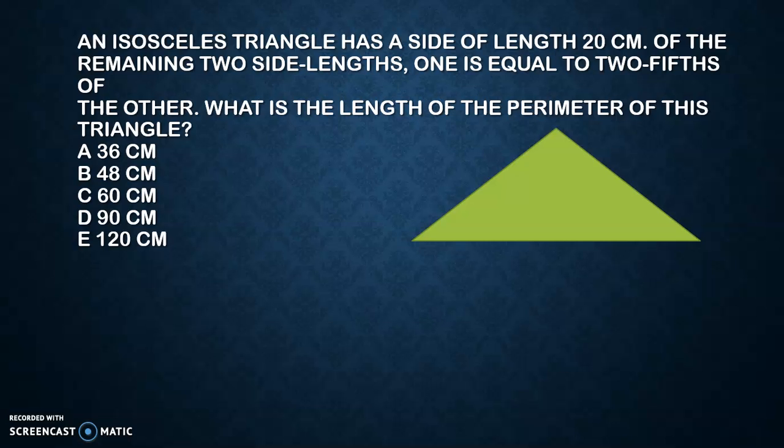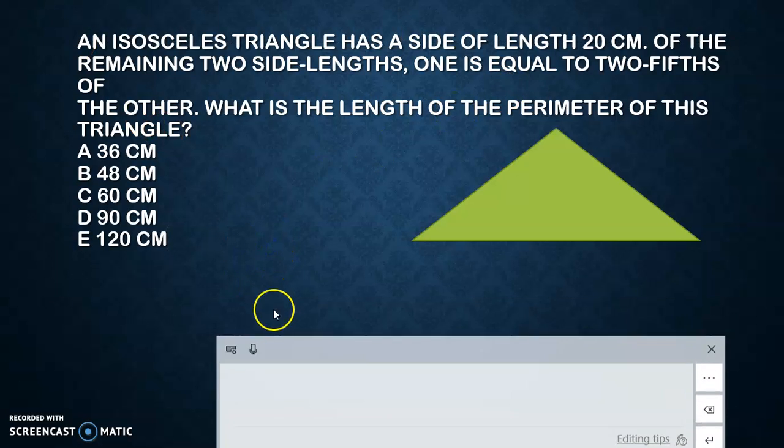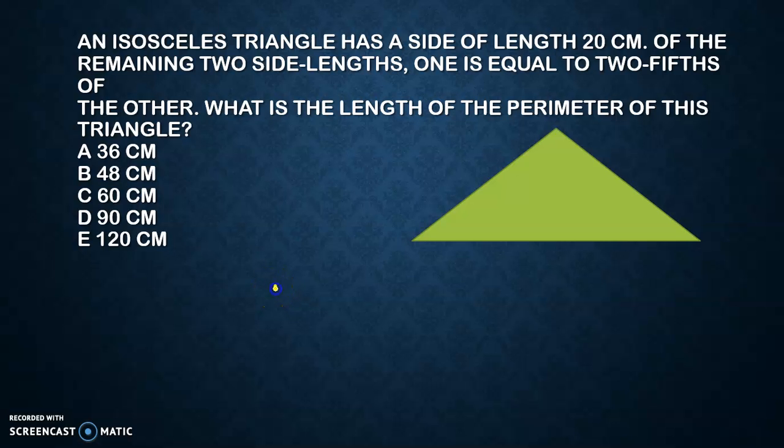Let's go to question number 2. This is an isosceles triangle - if I talk about isosceles triangle, that means both sides are equal. Now here they say the remaining two sides: one is equal to two-fifths of the other. So one is equal to two-fifths of 20. If you calculate, you get 8 centimeter.